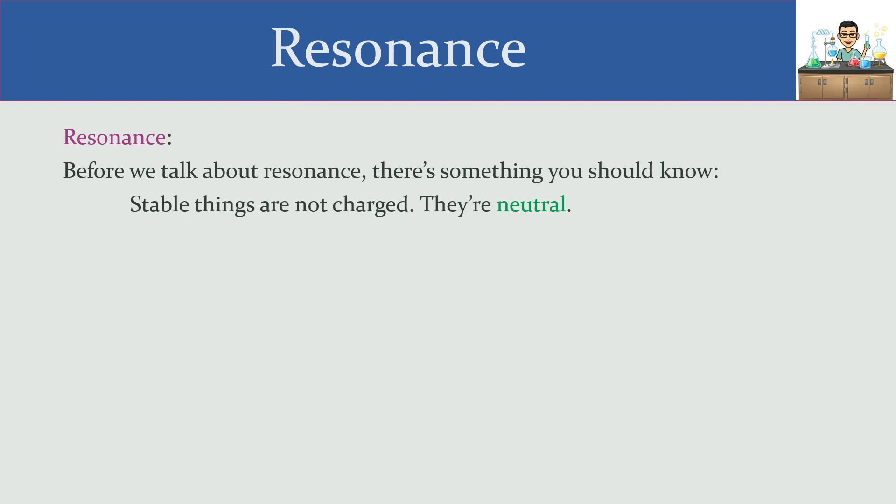A minus charge attracts a positive charge, which is a type of change as well. But neutral things aren't attracted to each other. They're neutral, and that helps to stabilize them. The idea behind resonance is to be a stabilizing force for our molecule. Resonance helps a molecule to become more neutral by moving electrons around.